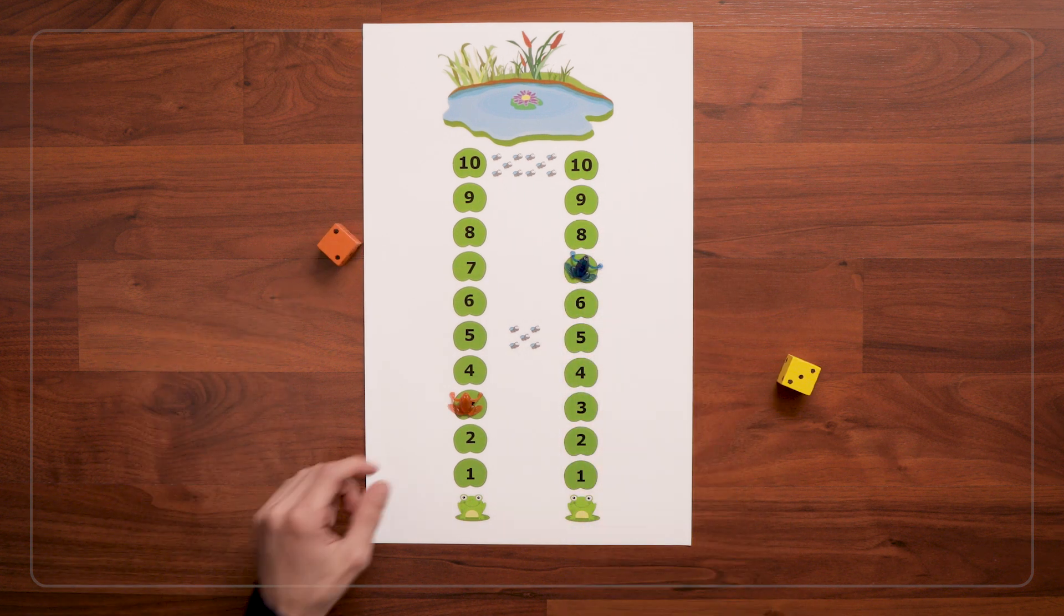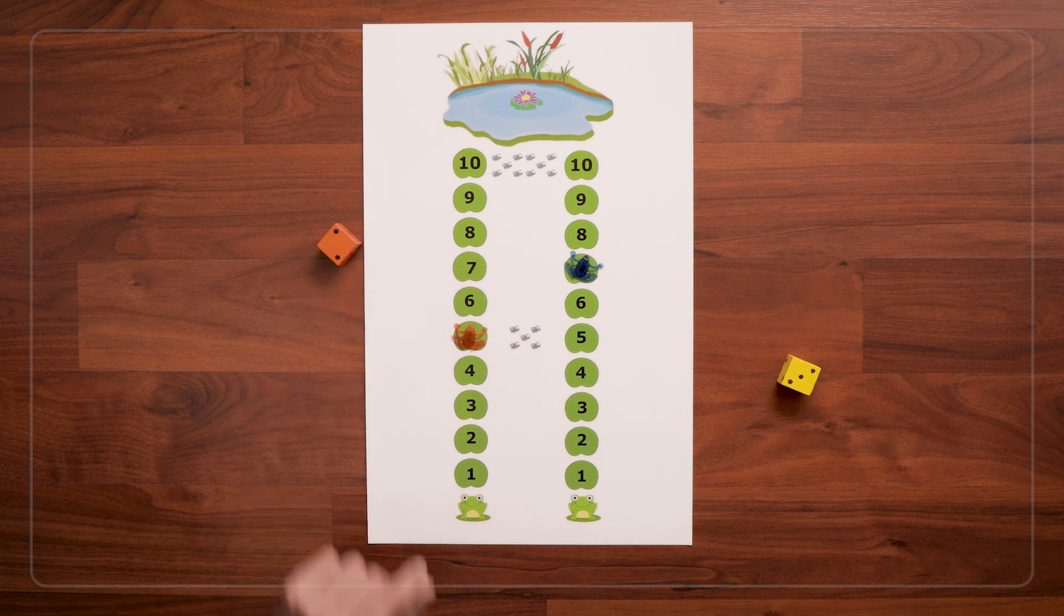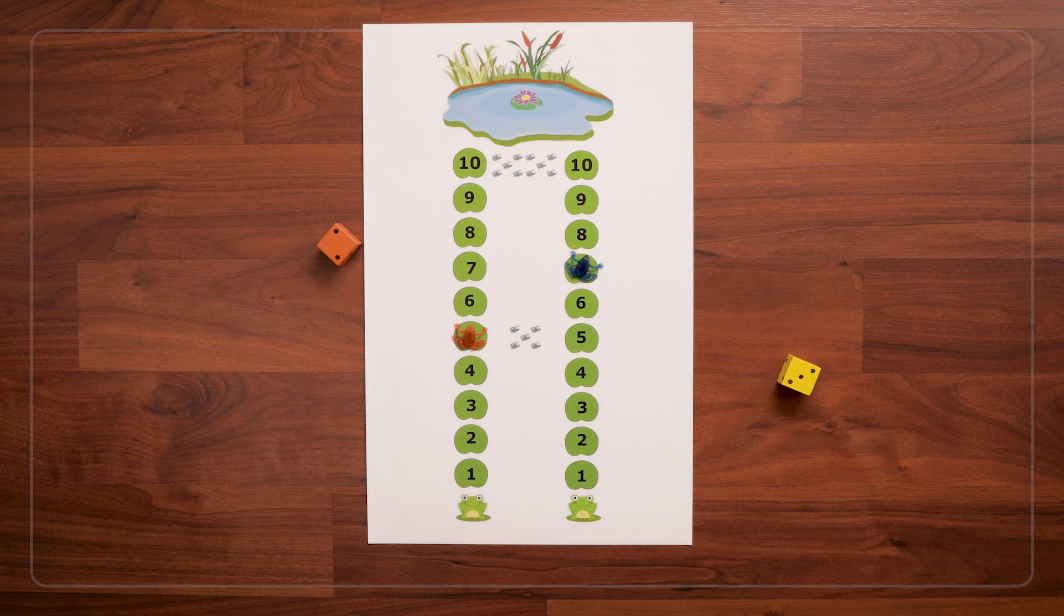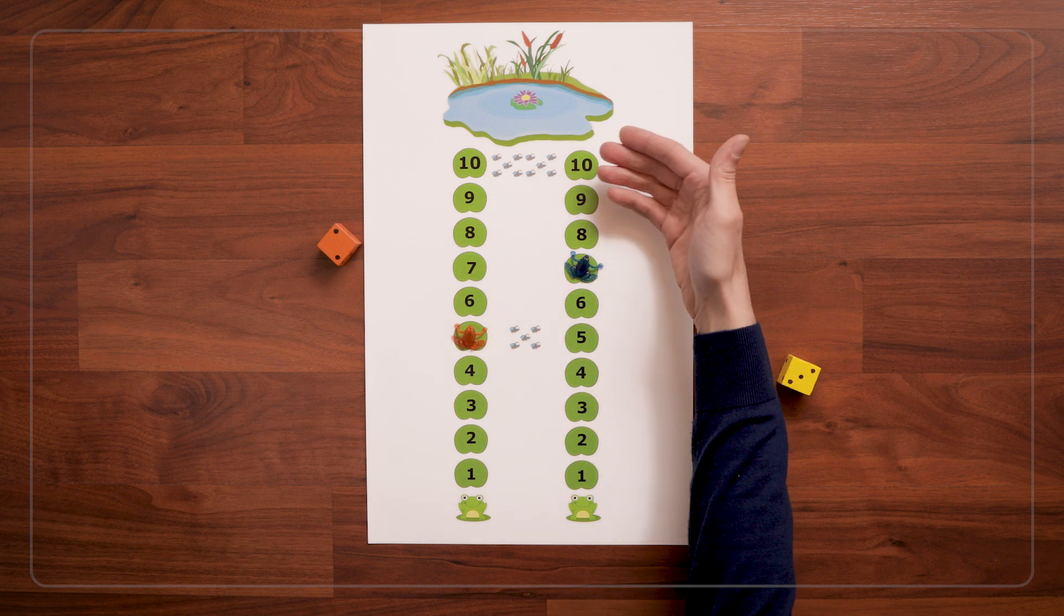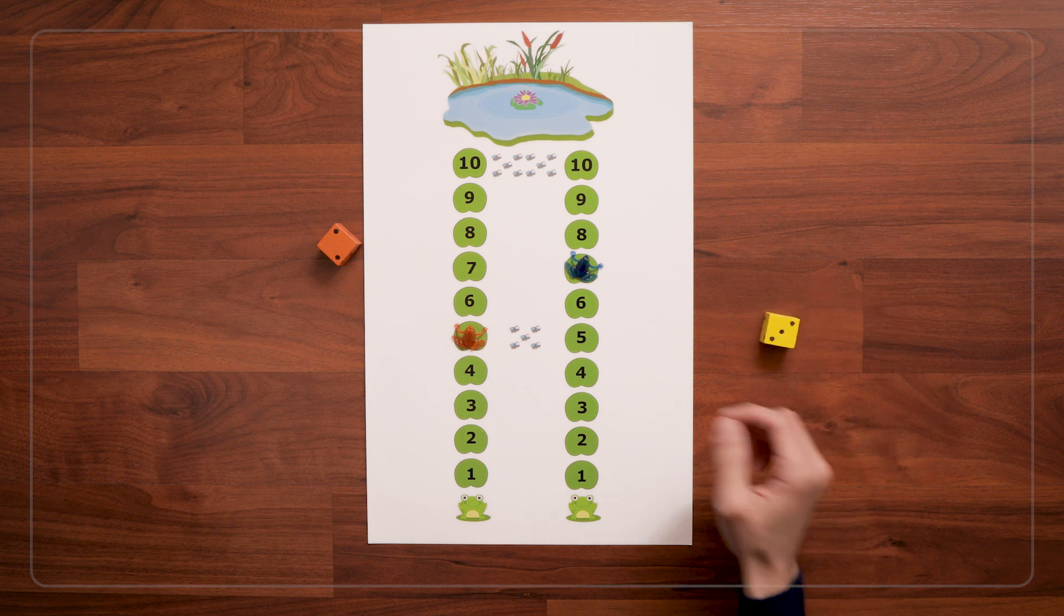And while you play, you can ask questions like, How many more hops will it take for us to get to the pond? Or, what number do you want to roll? Do you want to roll a 1 or a 3? Why? And helping them see that a 3 would get them closer to the pond.